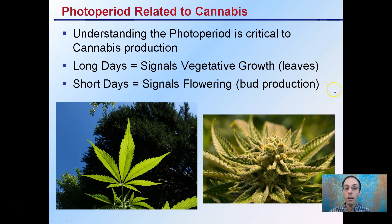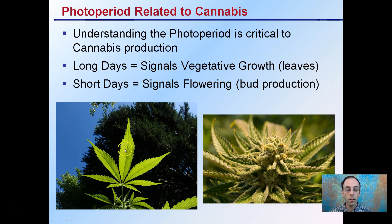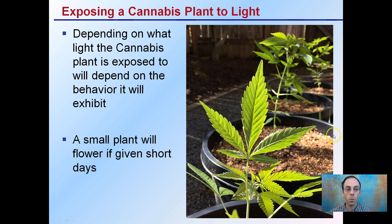Understanding the photoperiod is critical to cannabis production. During long days, this signals vegetative growth or leaf production. Short days signal flowering or bud production. Long days and short days will affect the overall morphology of the plant.